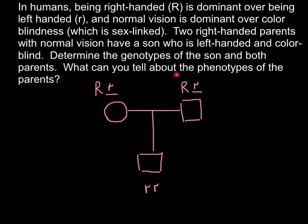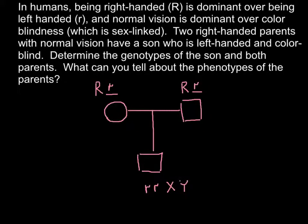Now we know all the genotypes for the R allele of the parents and their son. We are also told the son is colorblind, which means he must have one defective gene on his X chromosome. The son's genotype is XY, meaning he is male. His father is also XY, and his mother is XX. We now need to determine which parent gave this child the X chromosome with the defective gene for colorblindness.